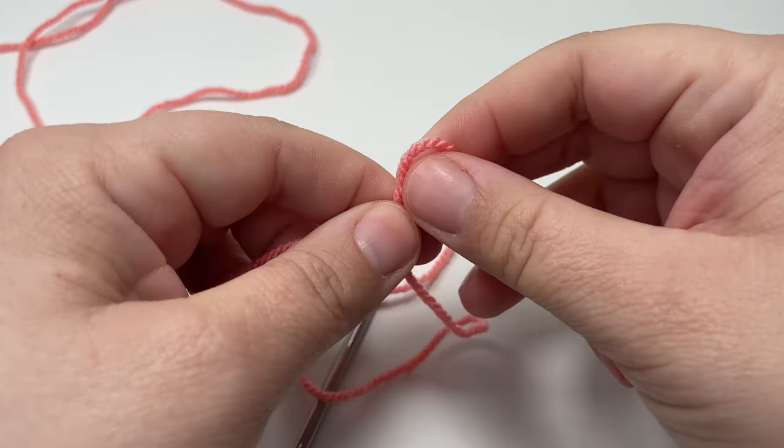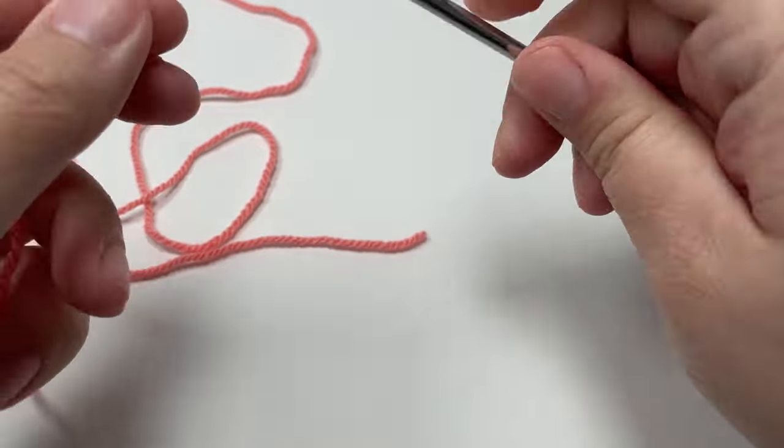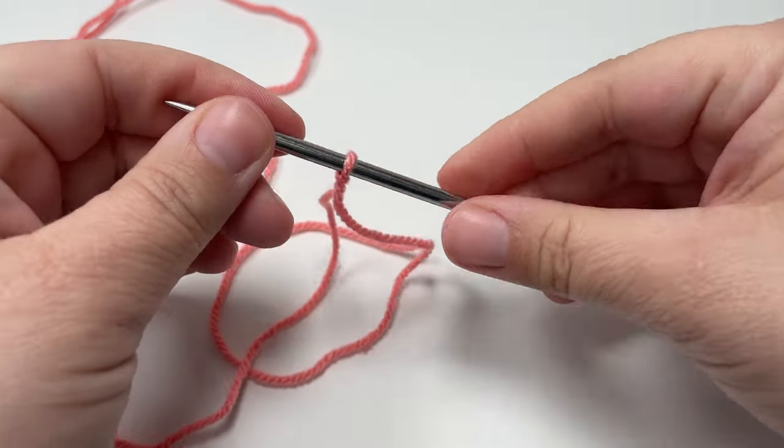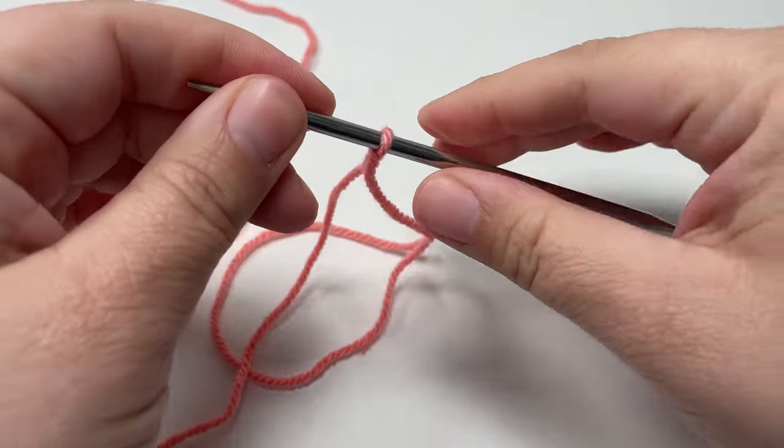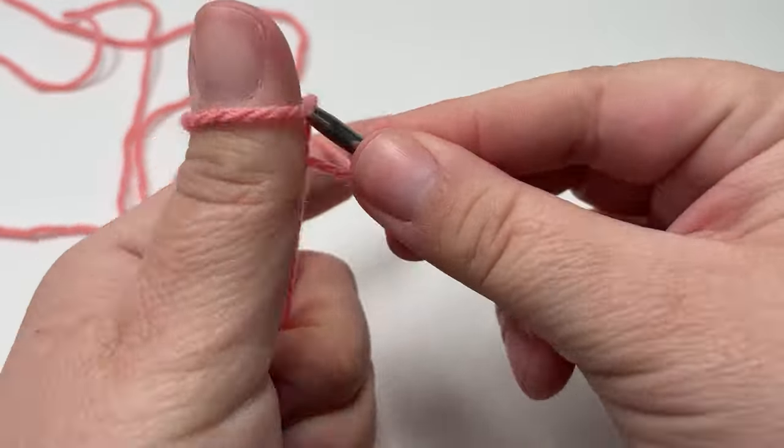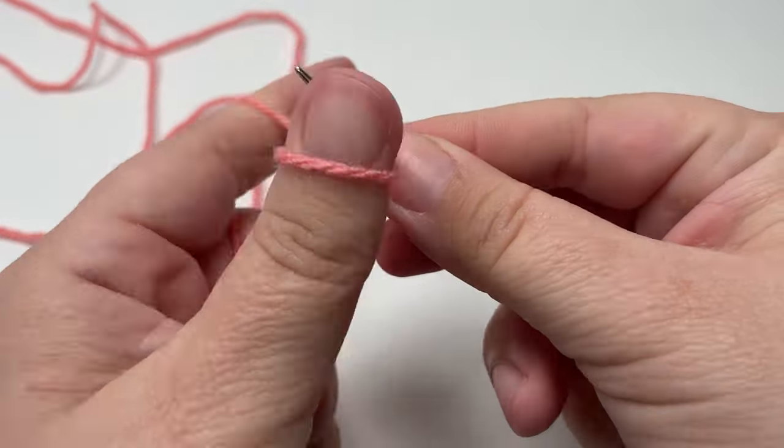To start your shawl you want to cast on five stitches. As I'm using double knit yarn I'm using four millimeter needles, but you would want to use the correct size needles for the weight of yarn that you have chosen to use. I like to cast on using the long tail method but please don't let that stop you from using your preferred cast on method. They will all work.